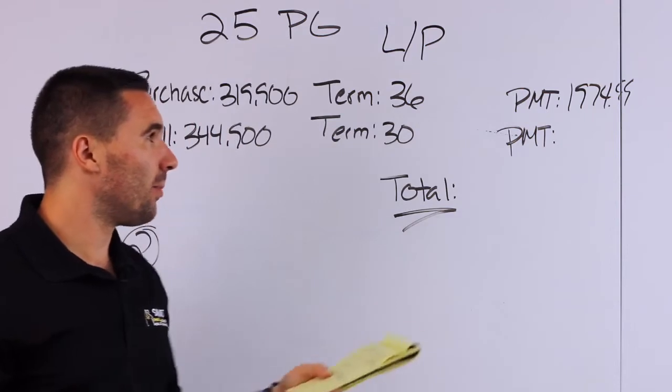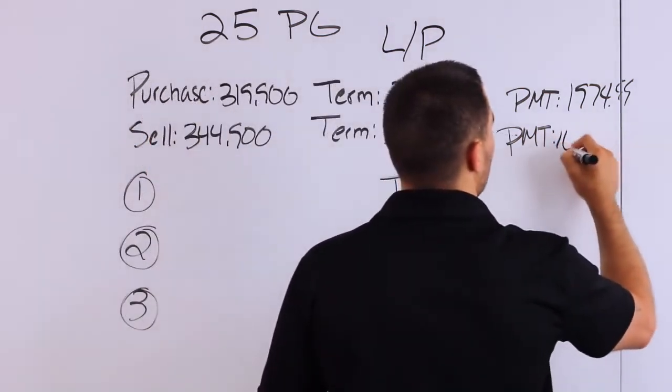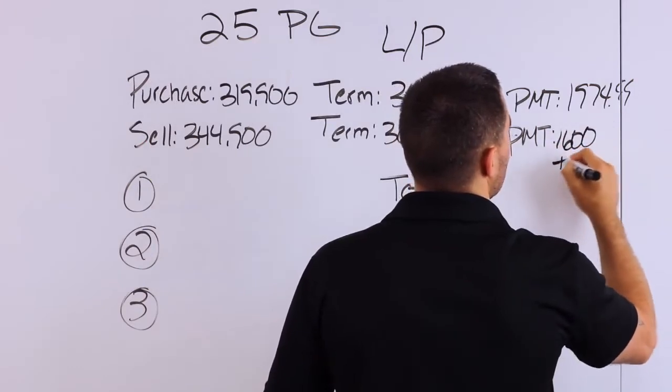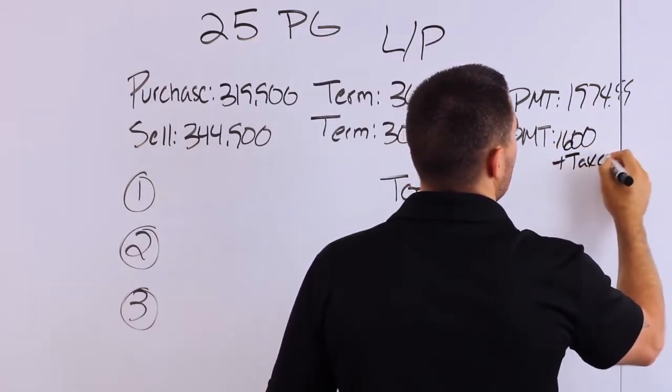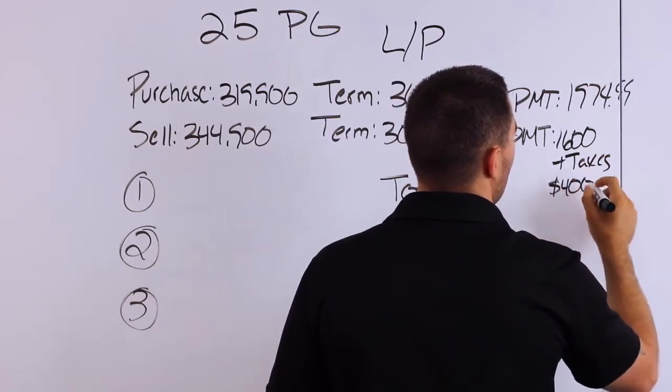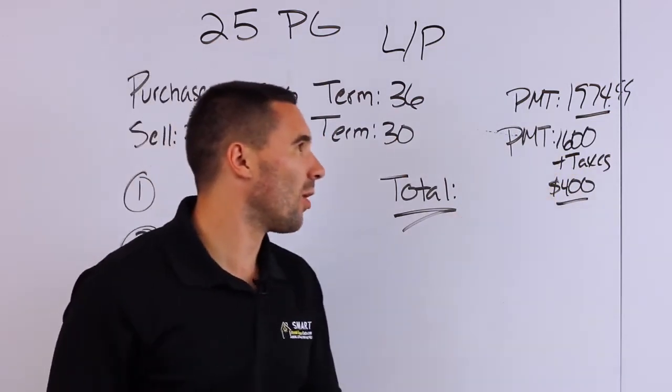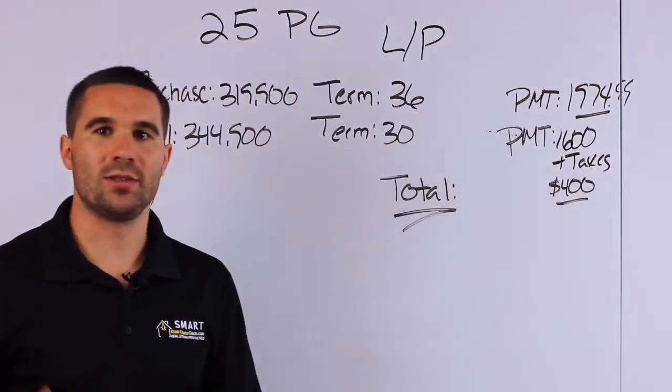We ended up selling this property for $1,600 a month plus taxes. Taxes are roughly $400 a month. So not a big spread here. We're coming out of pocket in 1974. We're taking in about $2,000.